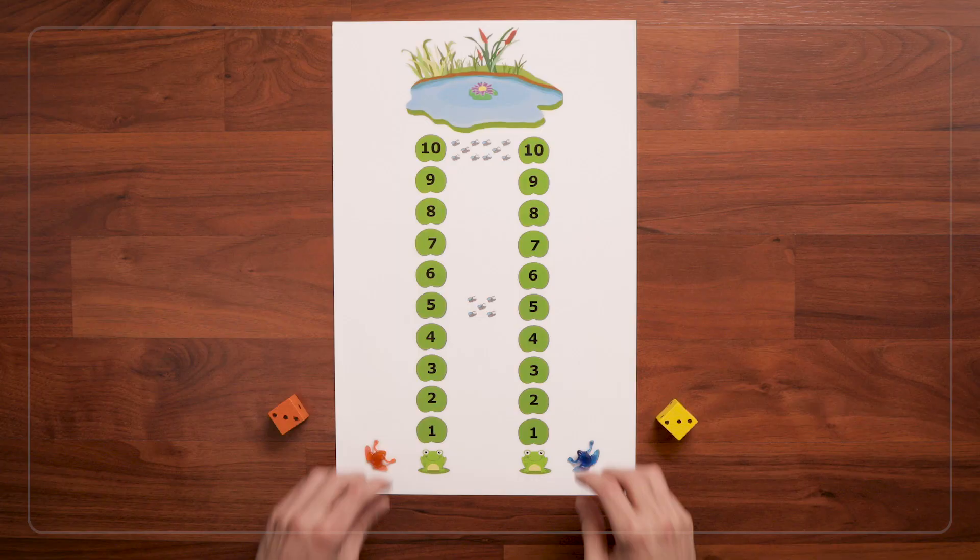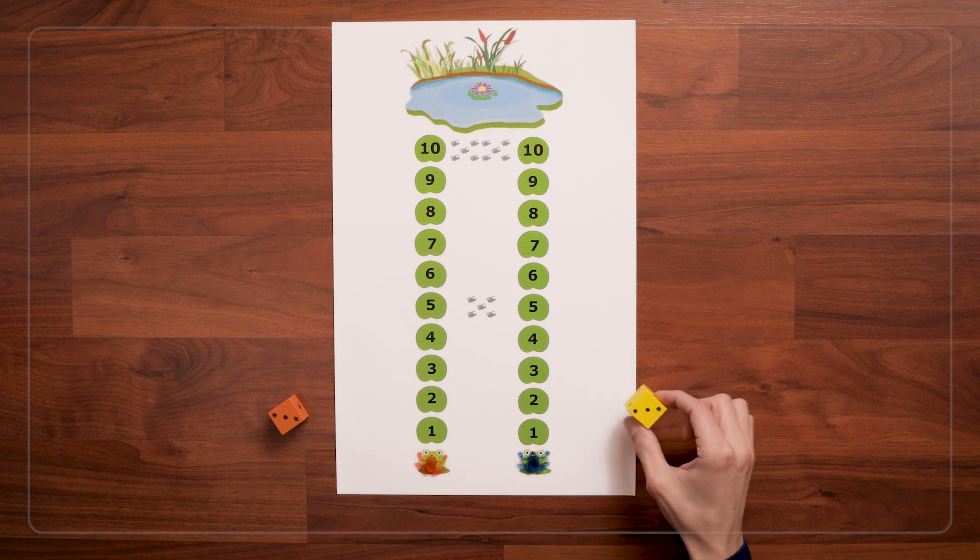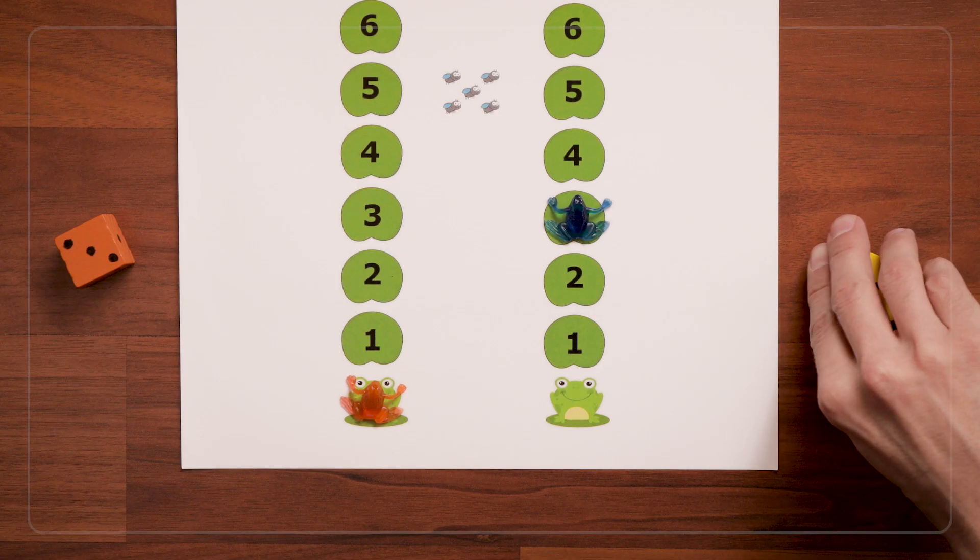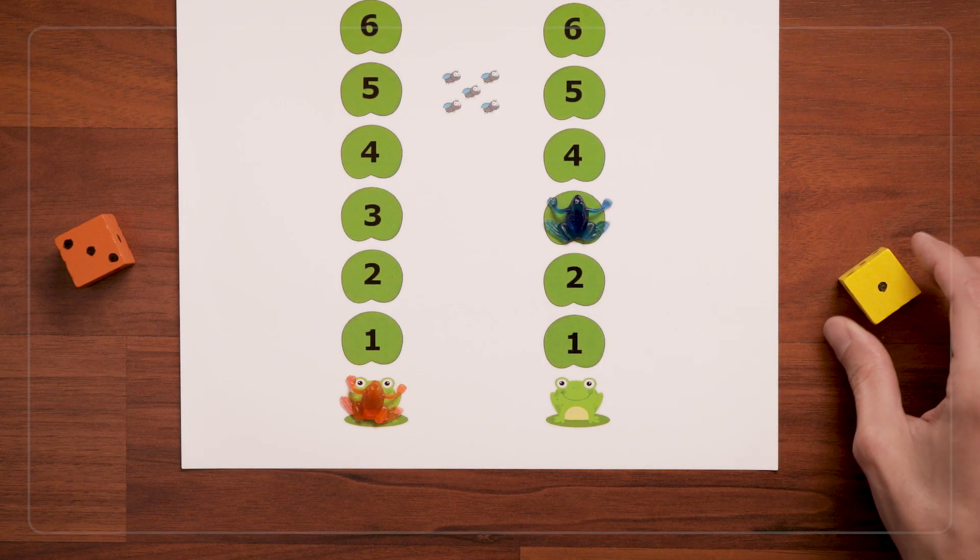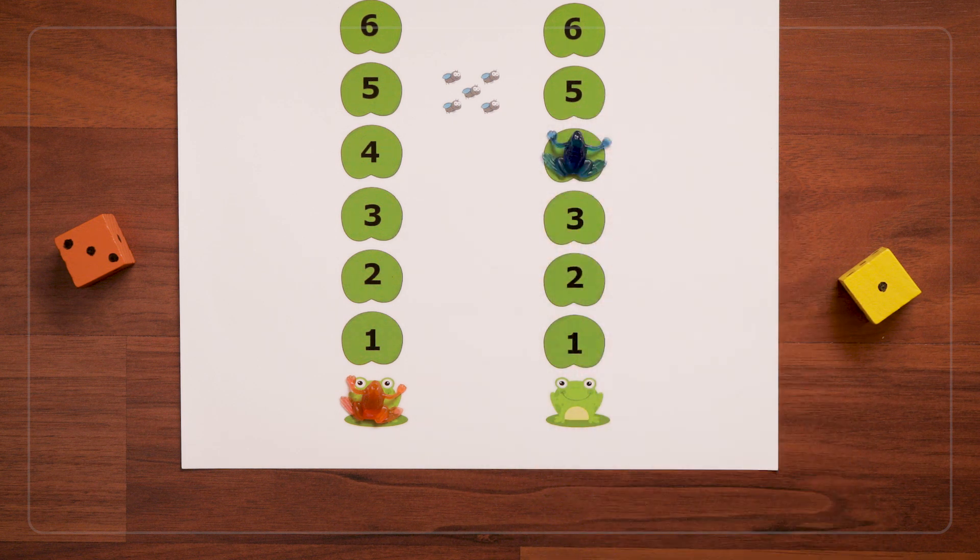Now many kids will not yet have had experience playing board games. So they might not know that when I roll a 3, I move 1 to 3 spaces. And then when I roll a 1, I'm not going to go back to 1, I'm going to move 1 more to 4.